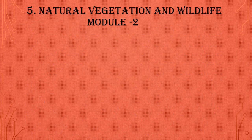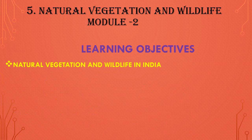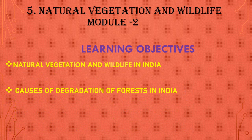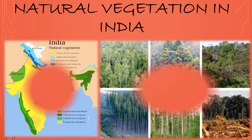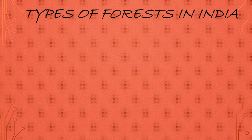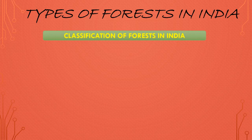Lesson number 5, Natural Vegetation and Wildlife, Module 2. We will be learning about natural vegetation and wildlife in India. What are the major causes of degradation of forests in India? What environmental issues are faced by India? What are the measures taken for protecting wildlife in India? Let us now study natural vegetation in India. When we talk about the natural vegetation of India, it includes various types of forests. Let us study the classification of forests in India.